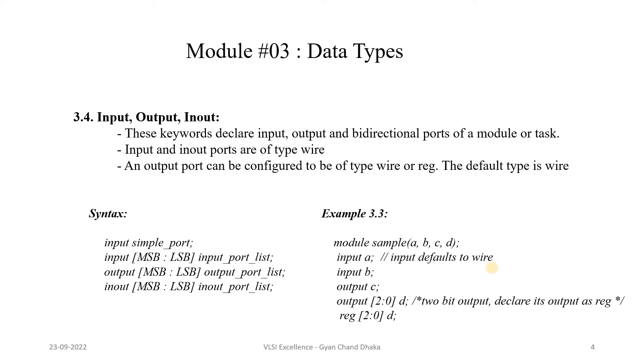Here the important point is the input and inout ports are of type wire. An input port, whenever we're declaring a port as an input port, its type is wire. The inout port will also have data type wire. And the output port can be configured to be of type wire or reg. The output port can be wire or it can also be reg.